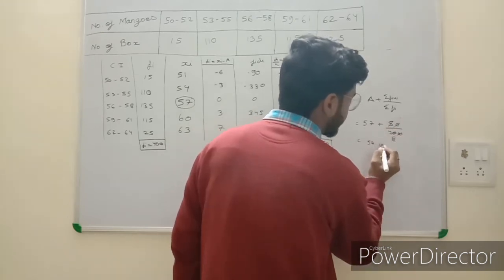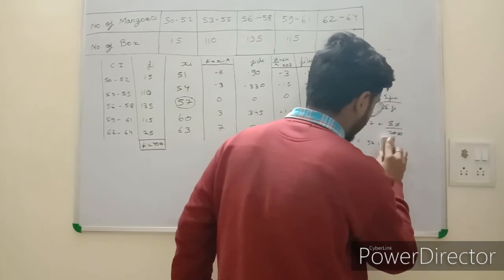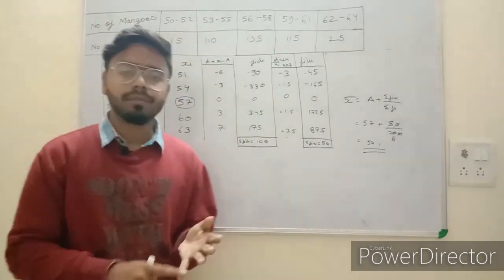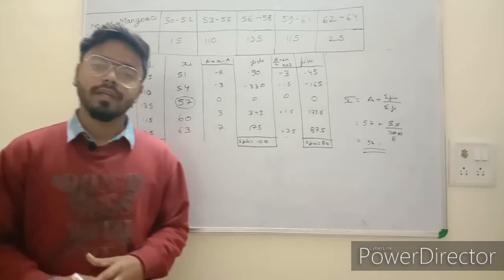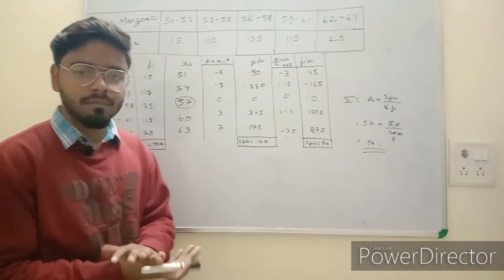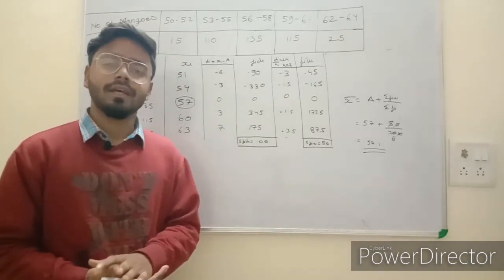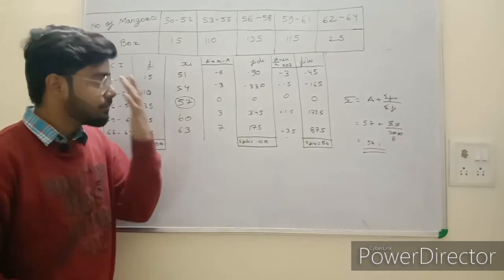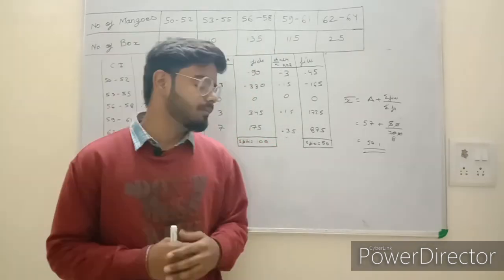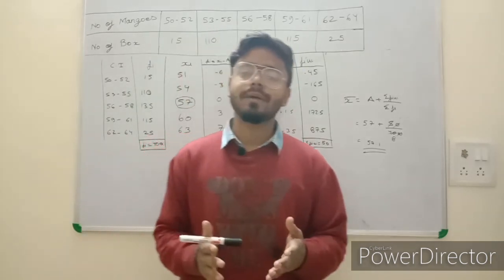The result is 57.25, approximately 57.1 — the same mean as before. You can see the mean is always the same whether you use the simple method, assumed mean method, or step deviation method. I have shown you all three methods. It is nothing difficult. For Class 10 boards, you need to learn all three. I hope you have understood, and I will be uploading many more videos for Class 10 and other classes — do subscribe and hit the bell icon.